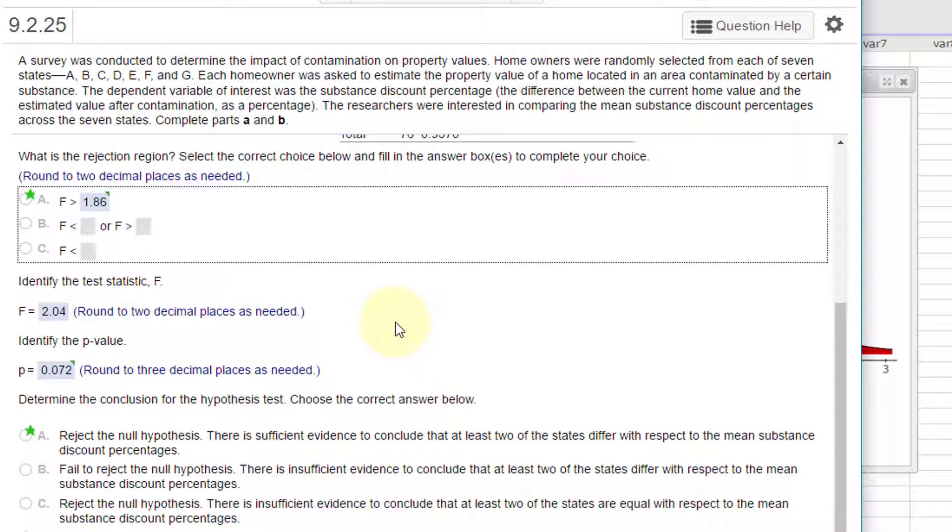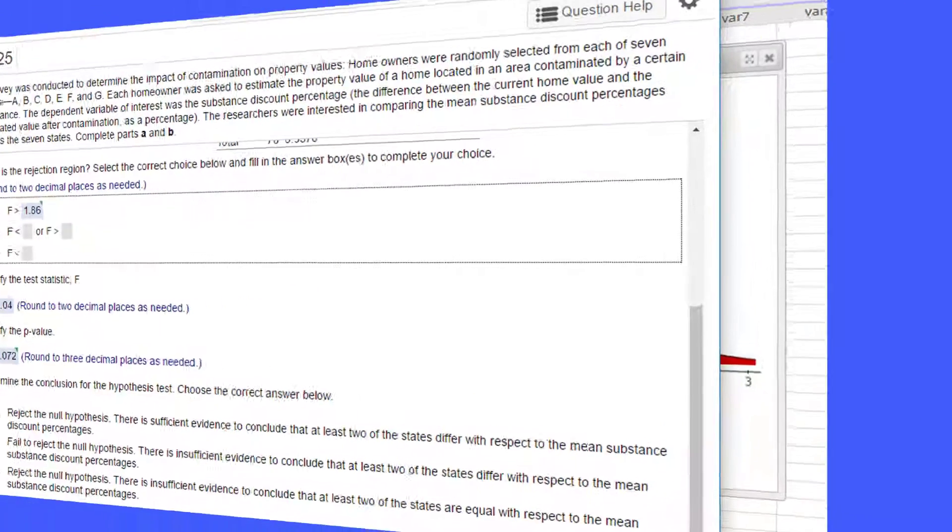So that's our conclusion: we reject the null. There's sufficient evidence to conclude there's at least two states that differ. There's a way we can tell which are which, but I'll show you that in another video.